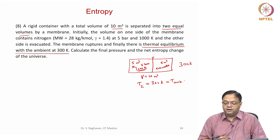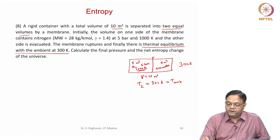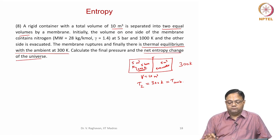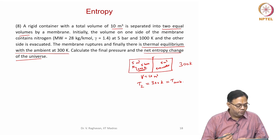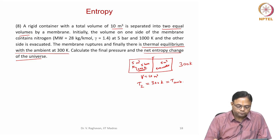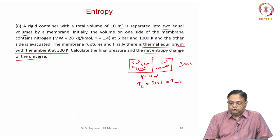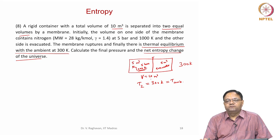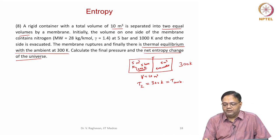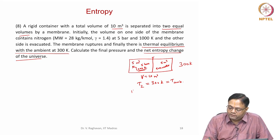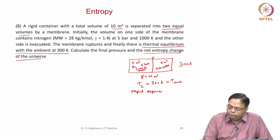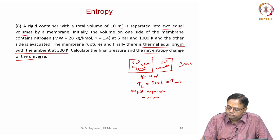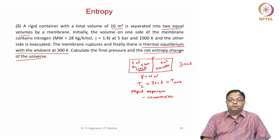What is asked is the final pressure and the net entropy change for the universe. Obviously, this is an irreversible process — you have to understand that rapid expansion takes place, so it is irreversible.